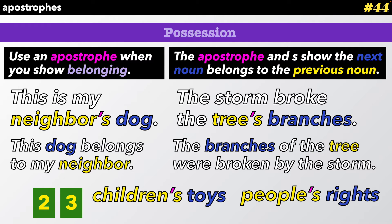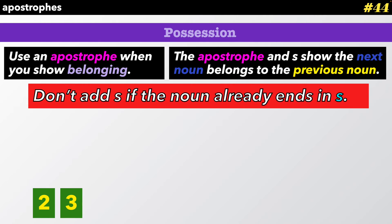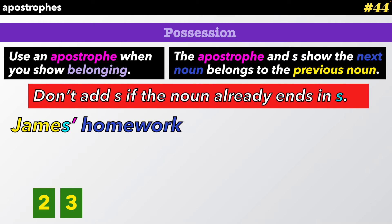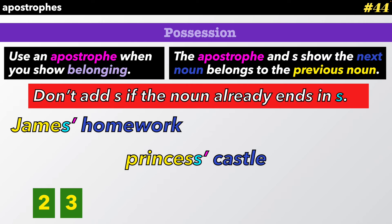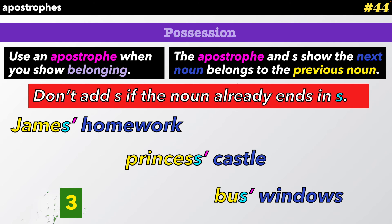This works even for nouns like people: people's rights, children's toys. However, don't add S if the noun already ends in S. Like James's homework — we say two S's, James's, but we don't write the second S. The princess's castle — again, we say the S but we don't write it. And the bus's windows. Don't add S if the noun already ends in S.